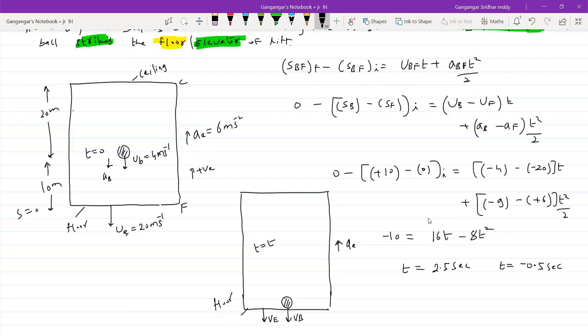So what do you mean by 2.5? I got positive value. I should take positive value only, not negative one. So it will strike the floor after what time of 2.5 seconds.